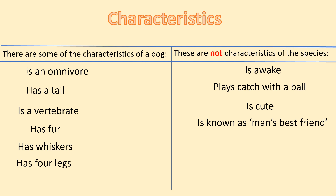Let's go through the answers. These are some of the characteristics of a dog: Is an omnivore — do you recall what an omnivore was? It's an animal which eats plants and meat. Well done if you remembered that from our previous learning. Has a tail. Is a vertebrate. Has fur. Has whiskers. And has four legs.